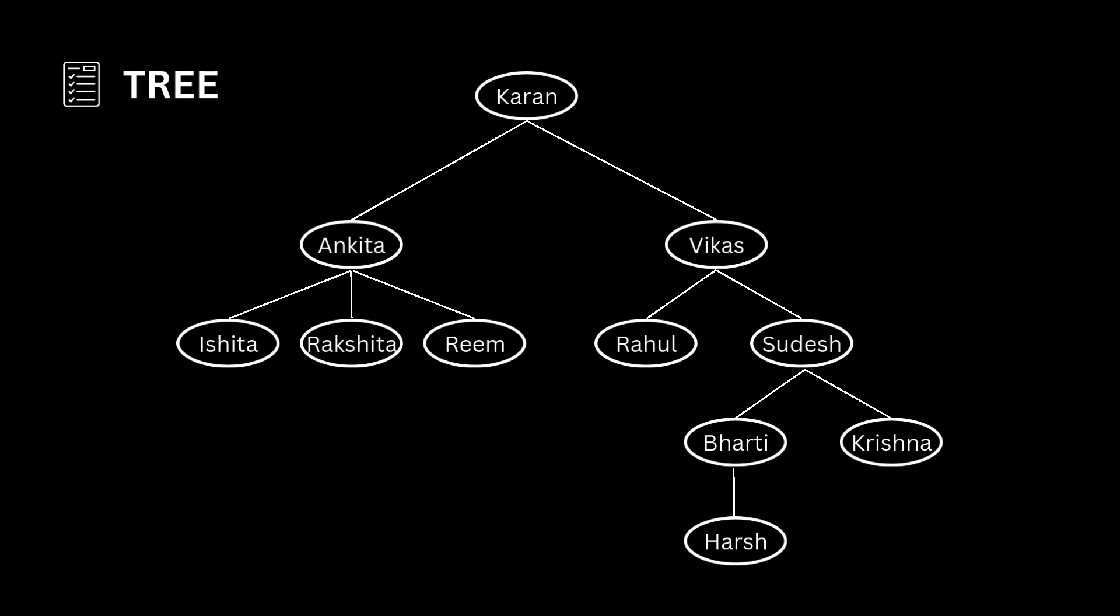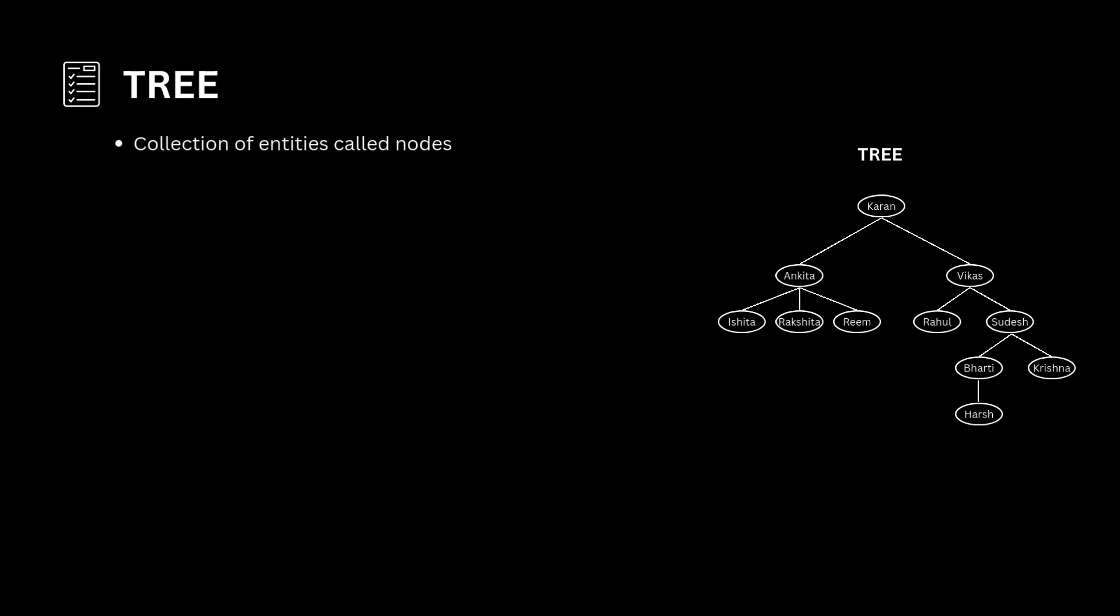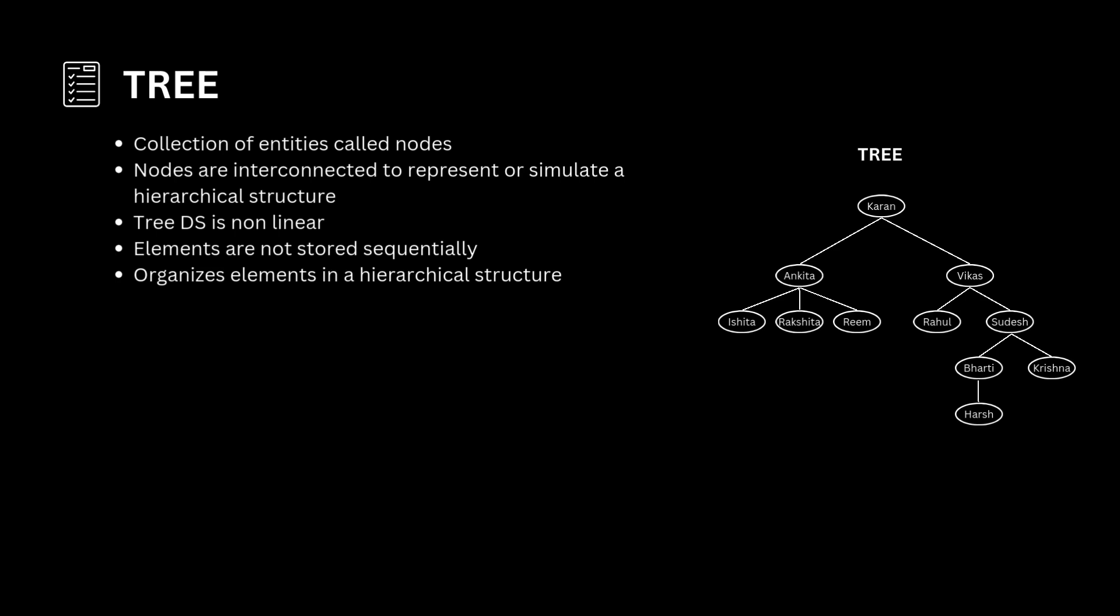Tree is an efficient way of storing data in a hierarchical way. A tree data structure can be defined as a collection of entities called nodes which are interconnected to represent or simulate a hierarchical structure. Tree data structure is non-linear because elements are not stored sequentially. Instead, it organizes elements in a hierarchical structure, arranging them across multiple levels.